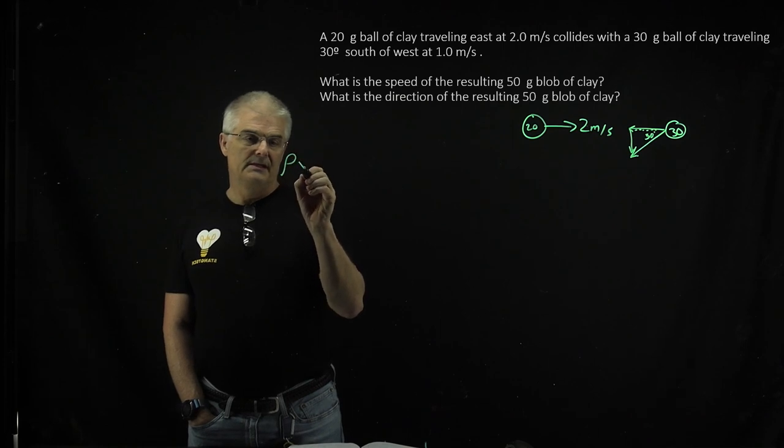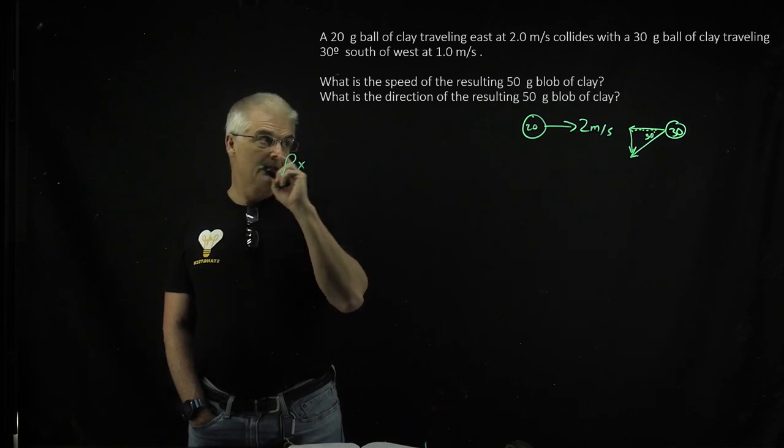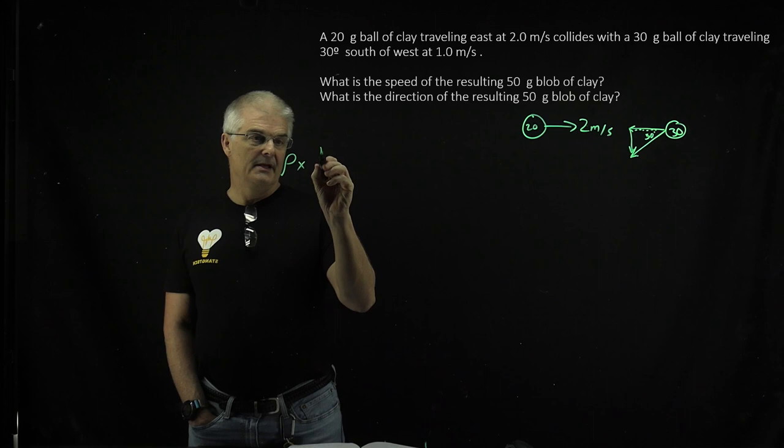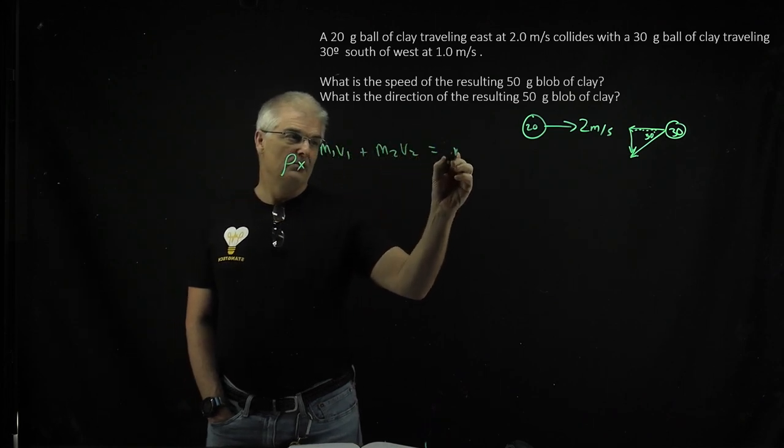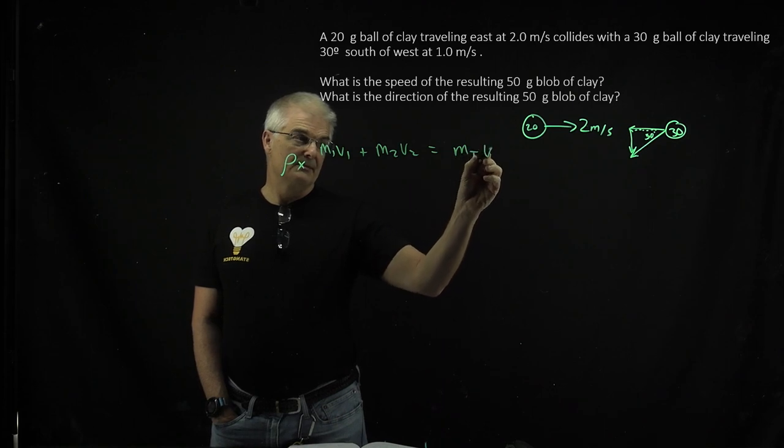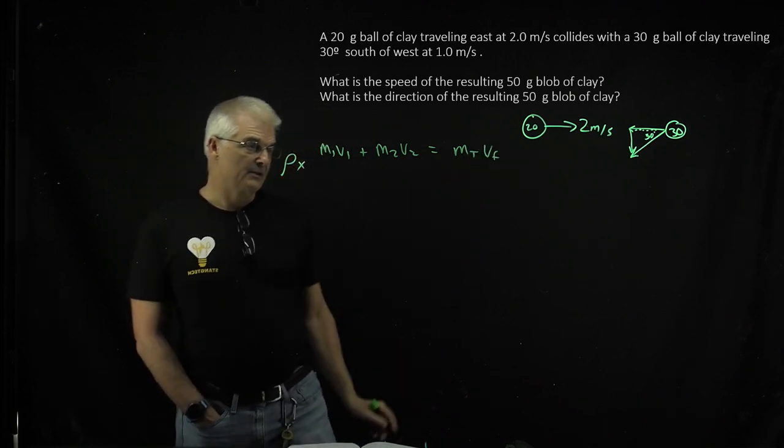P in the x direction: M₁V₁ + M₂V₂ = M_total × V_final. They're sticking, so I like to call it that way.